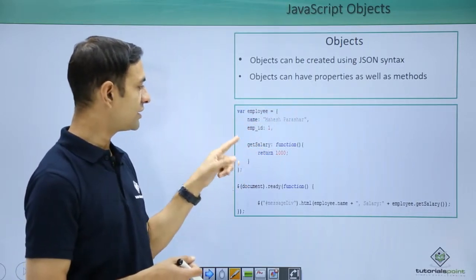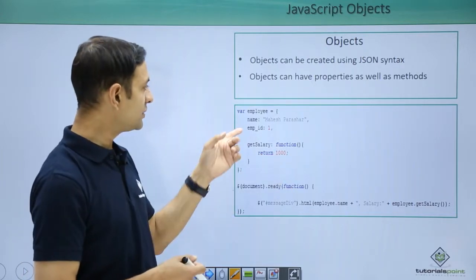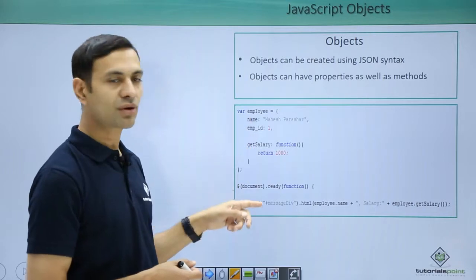Then methods get salary, it's a function which returns 1000, that's it. Let's use this particular employee object in our code.